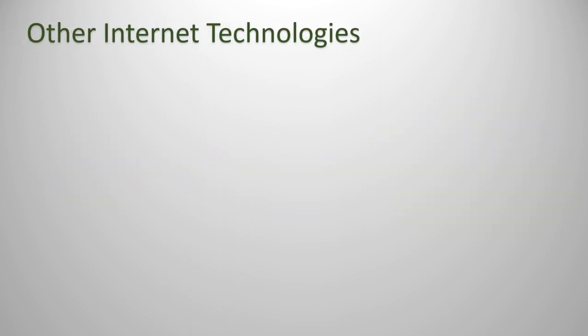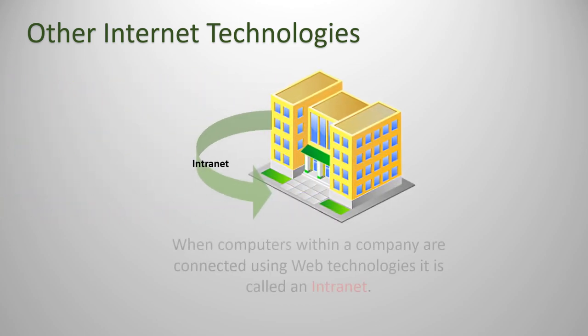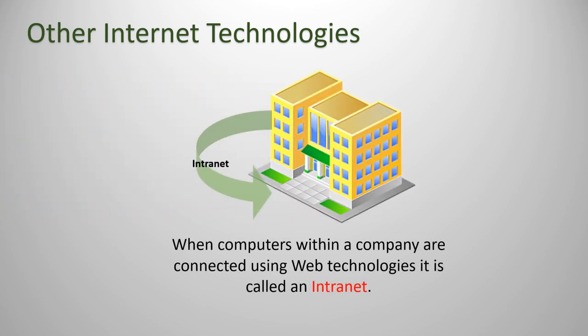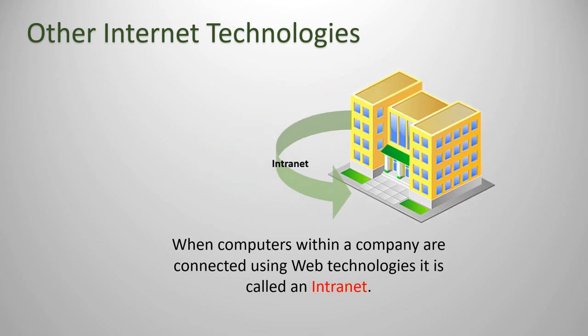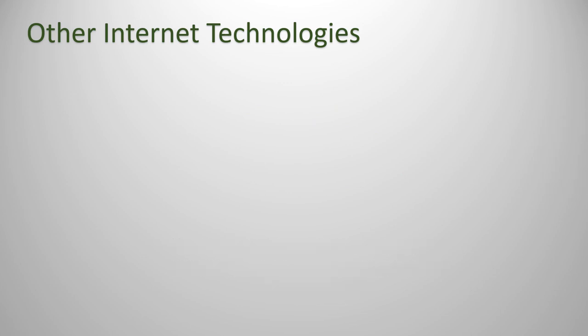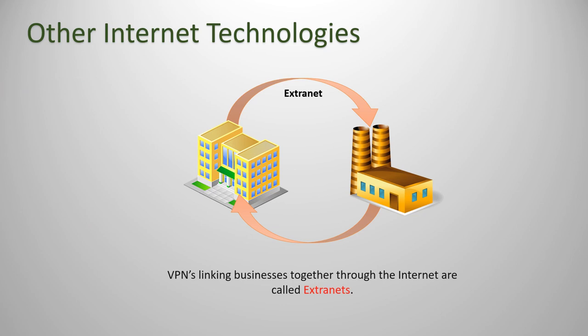We have just a few more terms to cover under other internet technologies. An Intranet is when computers within a single company or building are connected using web technologies. An Extranet is similar to an intranet, except it involves businesses or other buildings being linked together through internet and VPN technology.